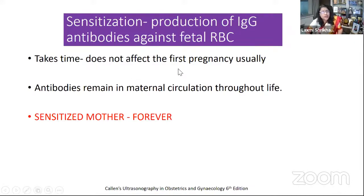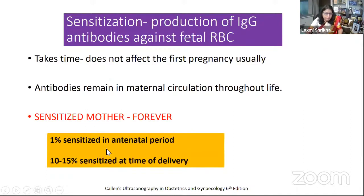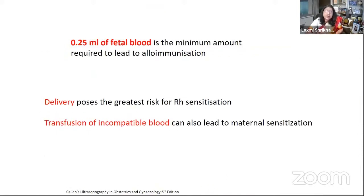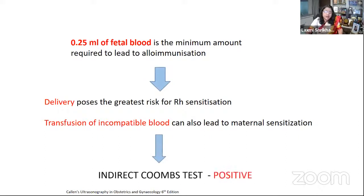Sensitization does not usually affect the first pregnancy. Antibodies remain in maternal circulation throughout life, and once the mother is sensitized, she remains sensitized forever. There is a 1% chance of getting sensitized in the antenatal period, but at the time of delivery, 10 to 15% of mothers get sensitized. The amount of blood needed for sensitization is just 0.25 ml — that is 1/4 ml of fetal blood is sufficient to lead to alloimmunization and cause indirect Coombs test positivity.